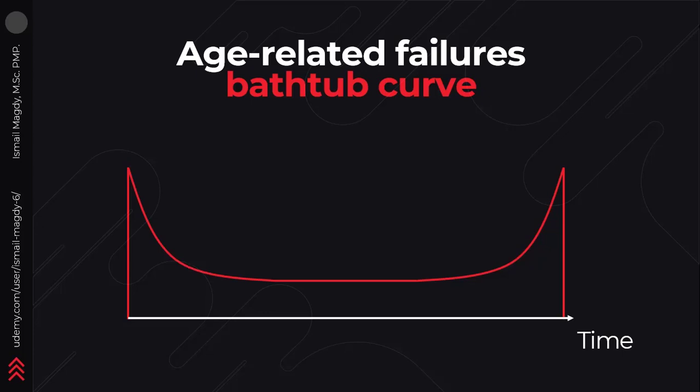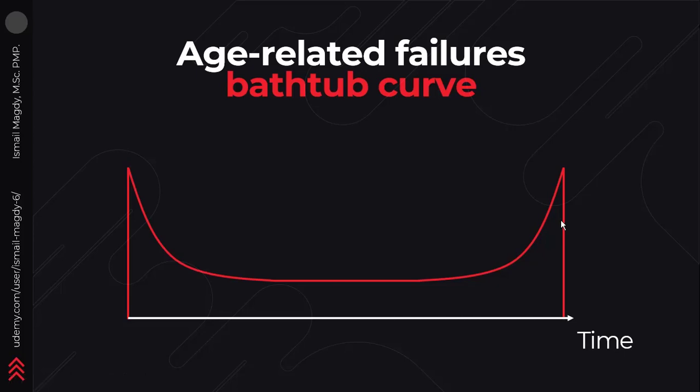After this phase we have a phase called the useful life period, and in this phase the rate of failures is at a minimum and they are random. After that we reach the third and final phase which is called normal wear out, and in this phase the rate of failures starts increasing again because of the normal wear and tear in the spare part. The bathtub curve might seem logical to you, but this failure pattern is not the only failure pattern, as we are going to see.